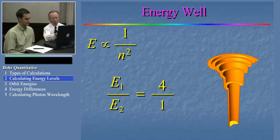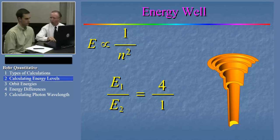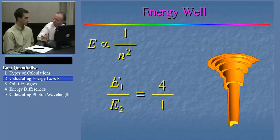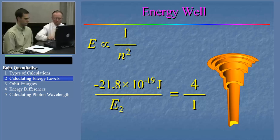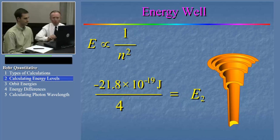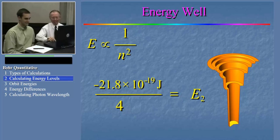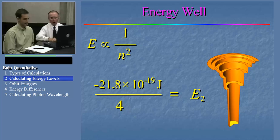We still don't know what E1 and E2 are, but if we knew one of those, we could figure out the other. It turns out that you can look up the value of the energy of the very first Bohr orbit in any freshman chemistry textbook. Let's substitute that in — there's the value right there. It's just straightforward algebra from this point to determine what E2 is. Now we have an expression with just one unknown: E2 equals this ratio, and it's just a matter of dividing by four.